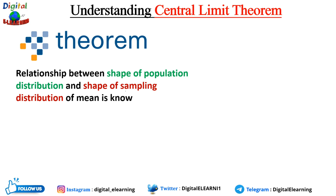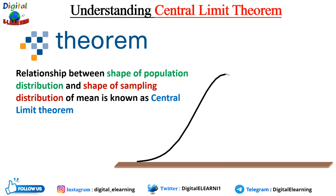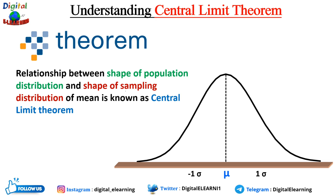The relationship between the shape of the population distribution and the shape of the sampling distribution of the mean is known as the central limit theorem. Its significance is that it permits us to use sample statistics to make inferences about population parameters without knowing anything about the shape of the frequency distribution of that population.